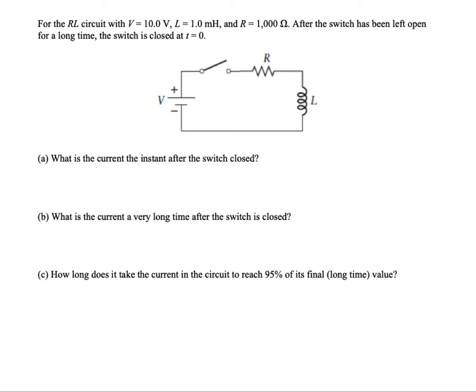Consider the following RL circuit where the voltage across the battery is 10 volts, the inductance of the inductor is 1 millihenry, and the resistance of the resistor is 1000 ohms. The switch has been left open for a long time so we'll assume the circuit is in equilibrium and no current is flowing. But we're going to close the switch at t equals zero and then see what happens at that time.